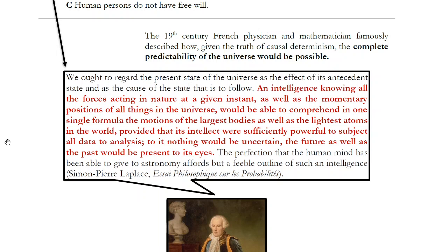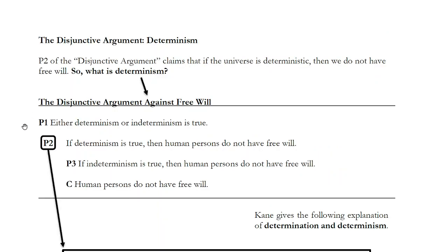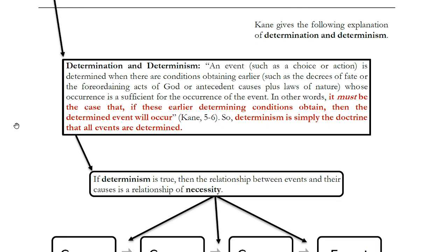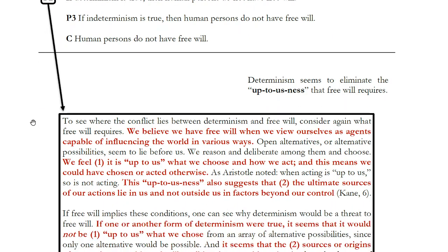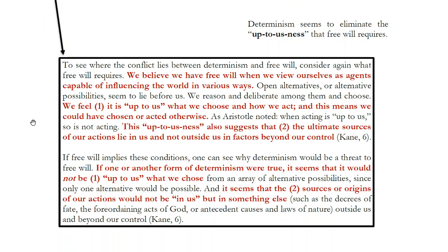Why does that matter? It makes a difference because it means there has to be a certain relationship between cause and effect, and that has very important implications for free will. To recap: if determinism is true, then the relationship between causes and effects is one of necessity. Given that cause one occurred, cause two had to occur, cause three had to occur, and then the event we're talking about had to occur in the way it did. Determinism means a relationship of necessity between cause and effect, and this is the justification for P2 of the argument.